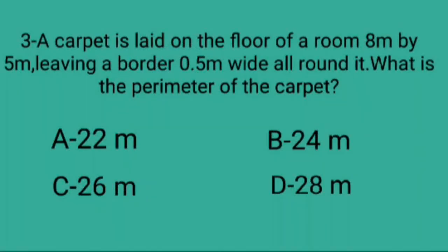Q3. A carpet is laid on the floor of a room 8 meter by 5 meter, leaving a border 0.5 meter wide all round it. What is the perimeter of the carpet? A. 22 meter, B. 24 meter, C. 26 meter, D. 28 meter.